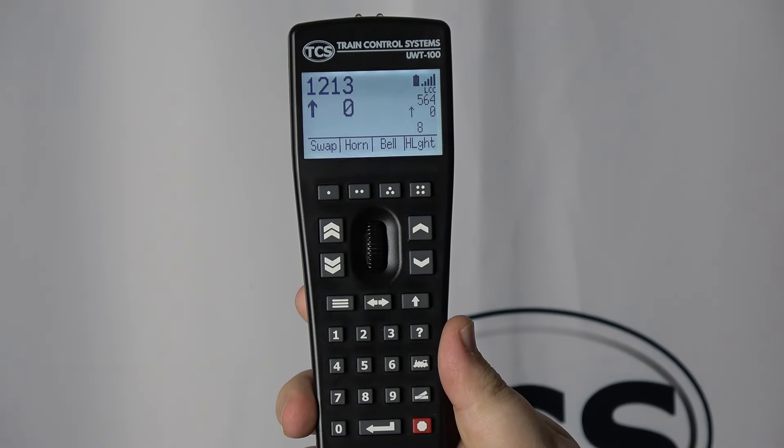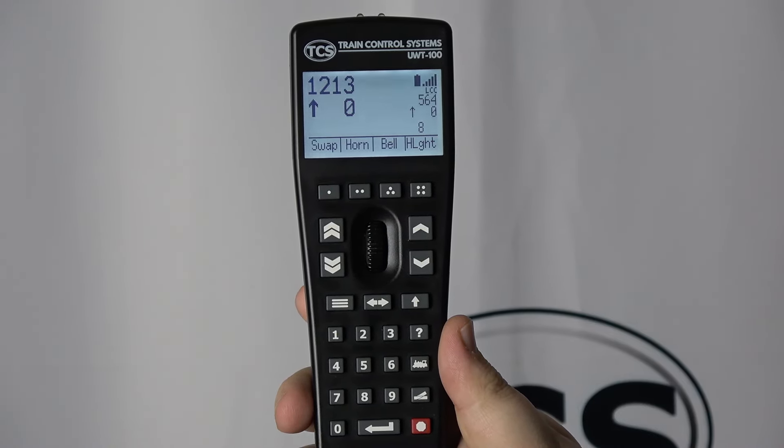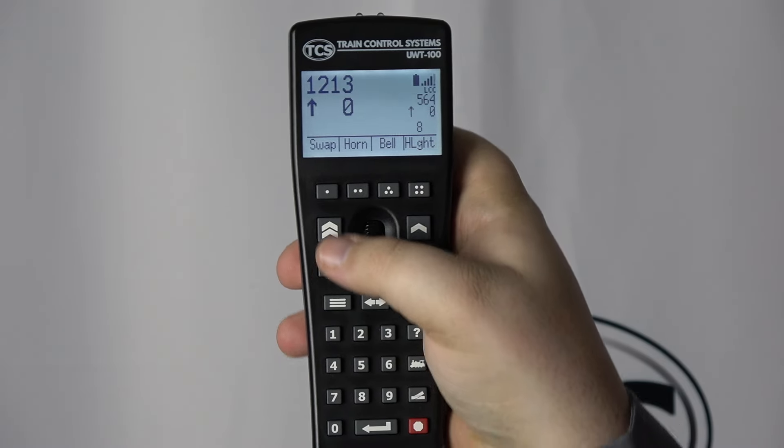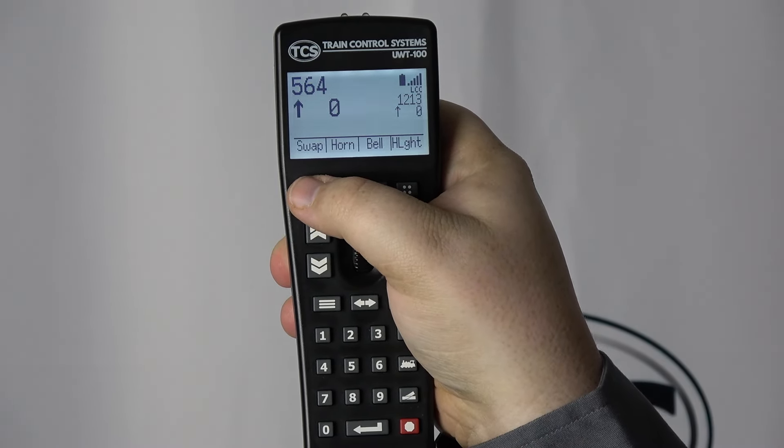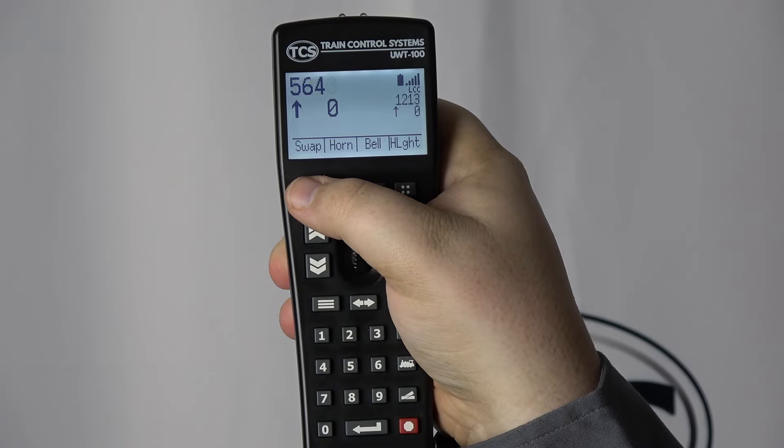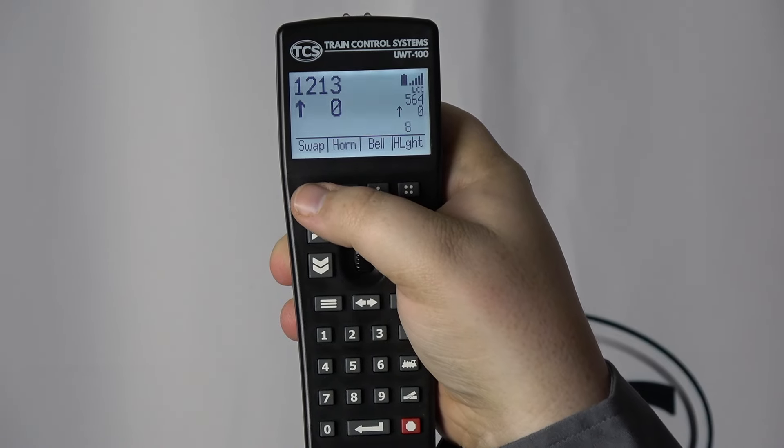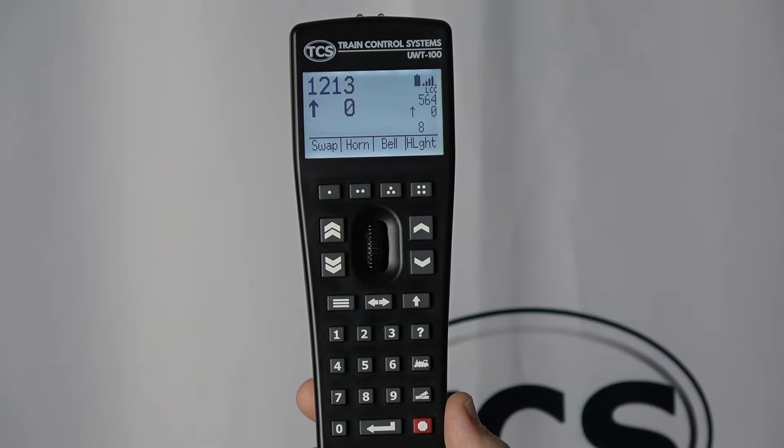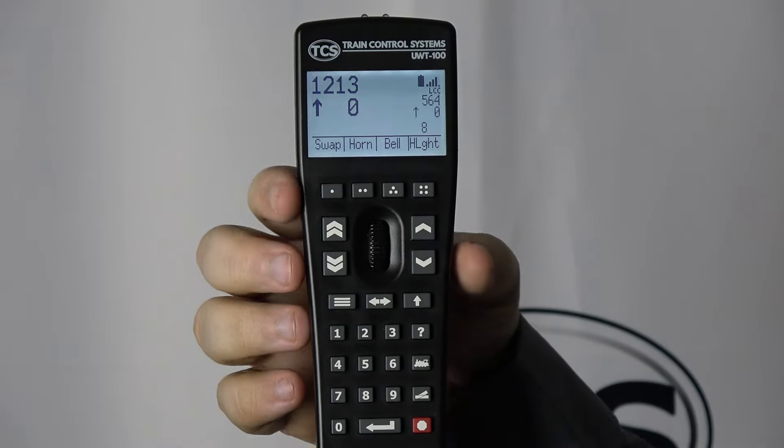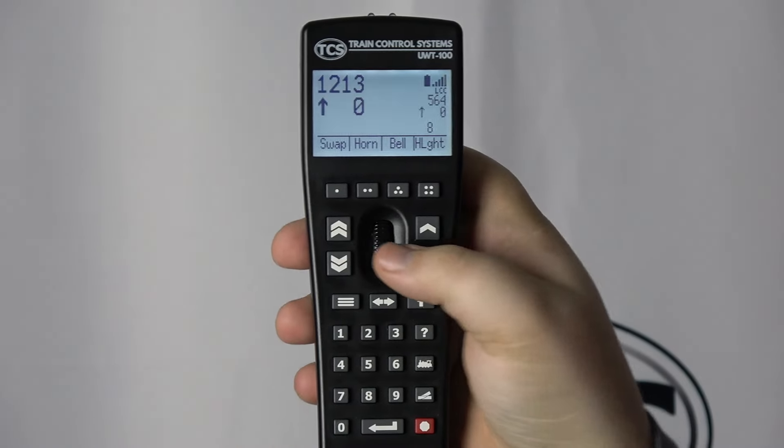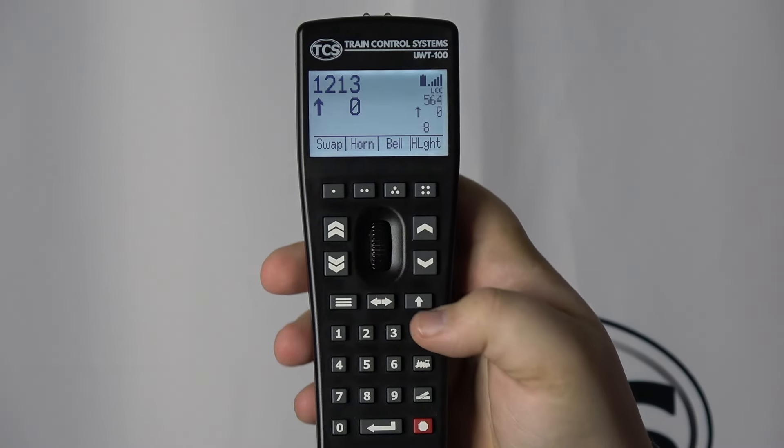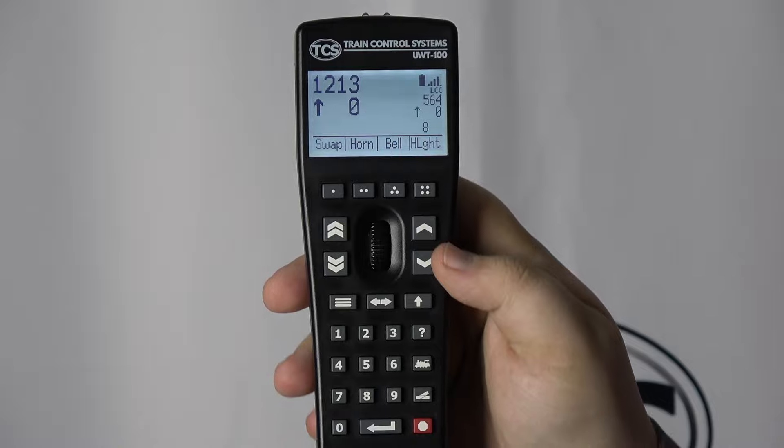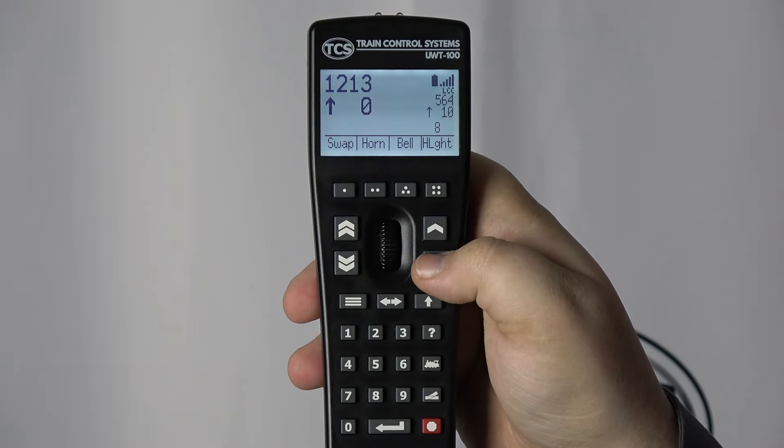Pressing the swap button will make the train in the primary slot change to the secondary slot and vice versa. By default, the double chevrons and the thumb wheel control the speed of the primary train. The single chevrons control the speed of the secondary train.